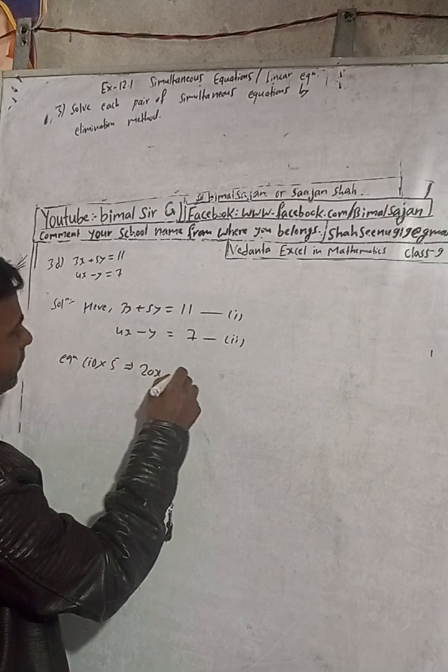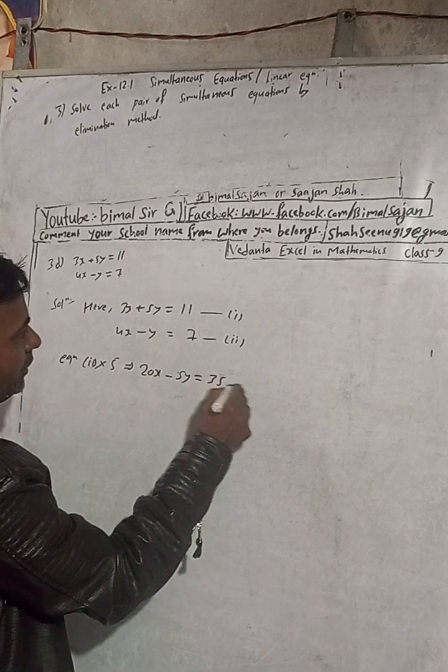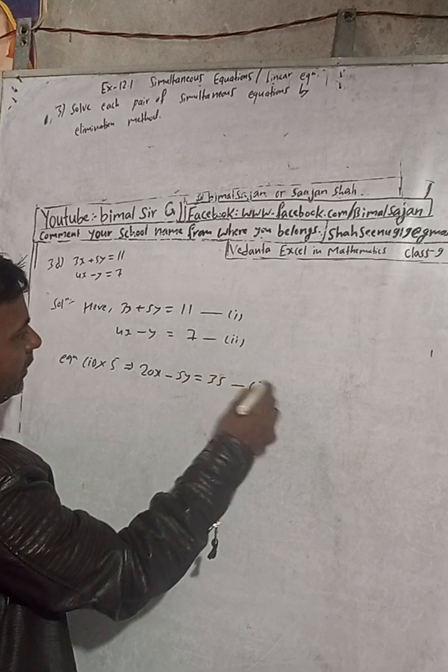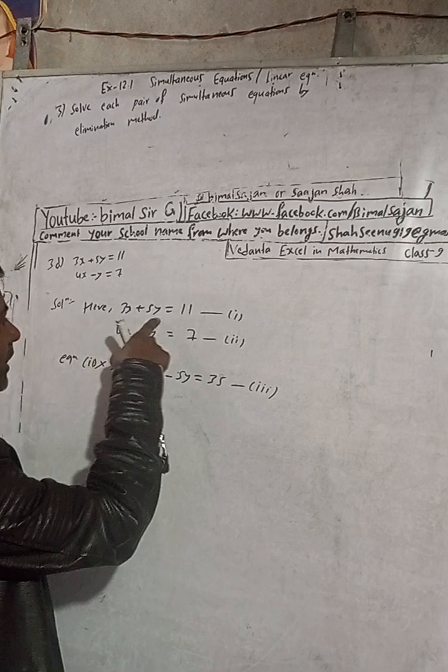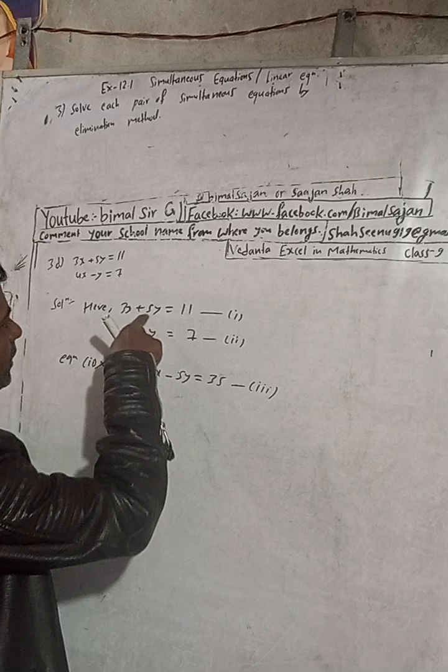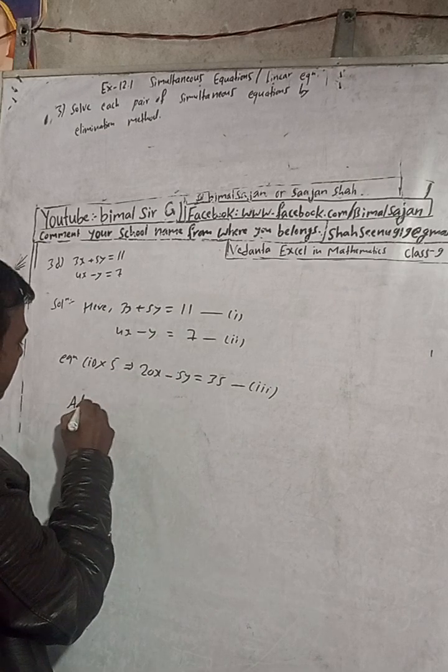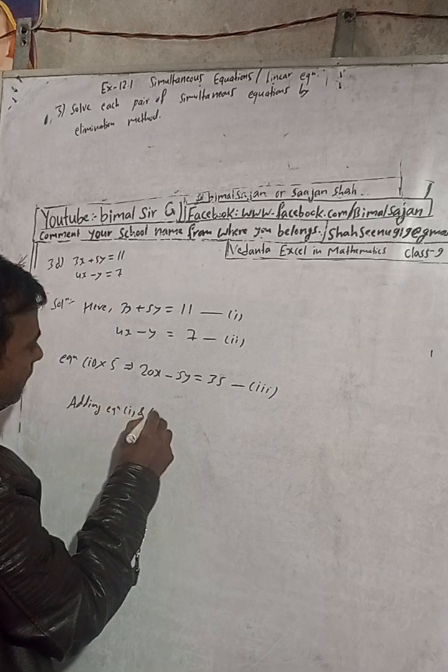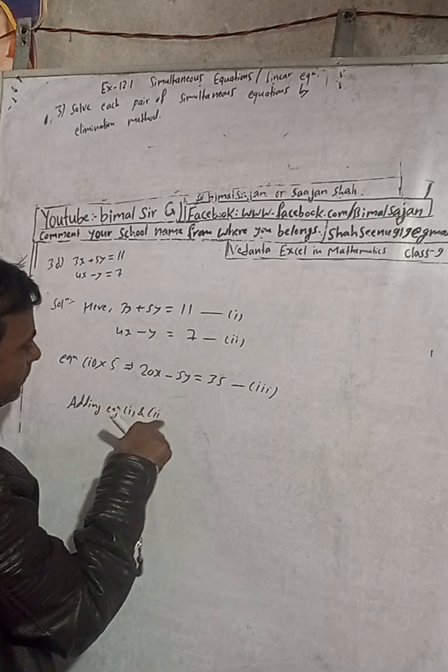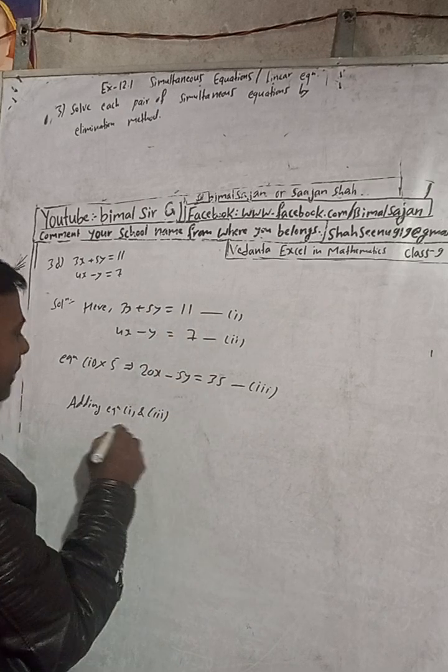So this is our equation 3. Now you can solve this one and two. So this is plus 5y minus 5y, so adding. Adding equation 1 and 3.